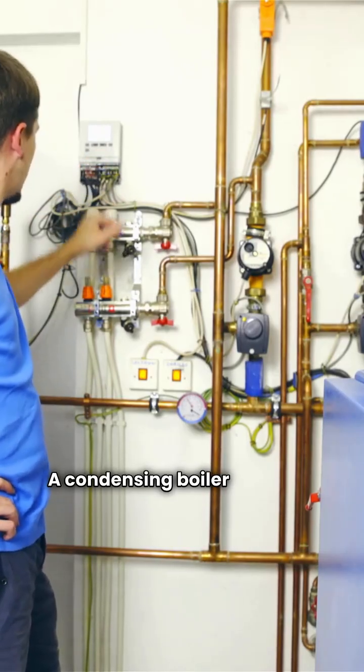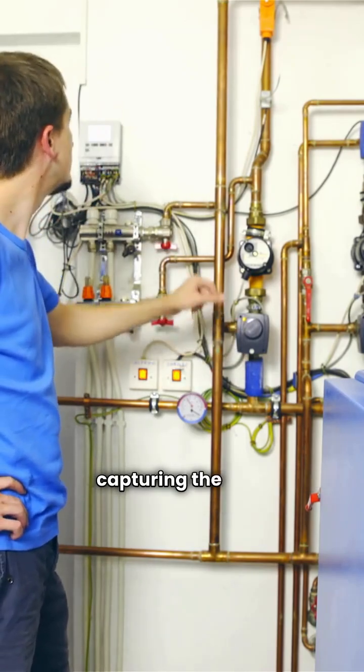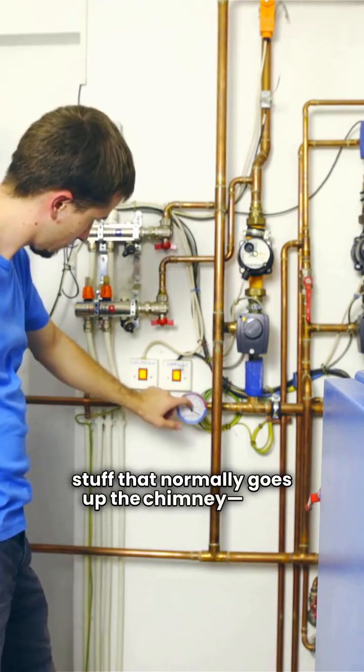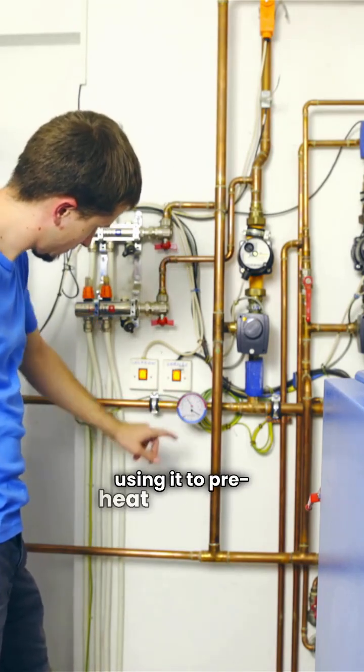A condensing boiler achieves that high efficiency by capturing the heat from the exhaust gases, the stuff that normally goes up the chimney, and using it to preheat the water.